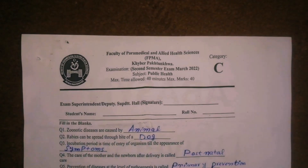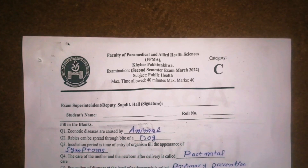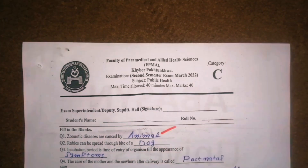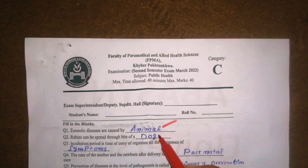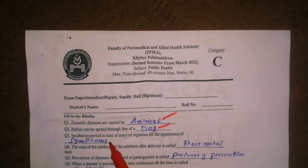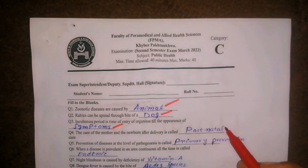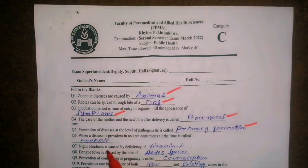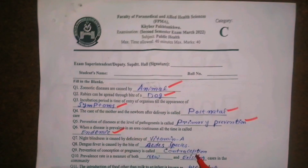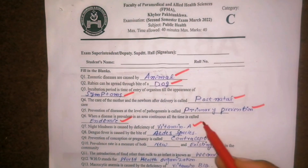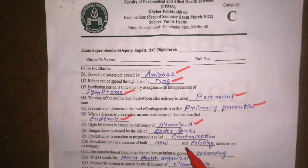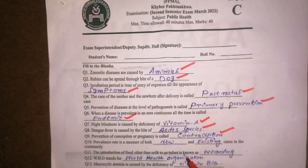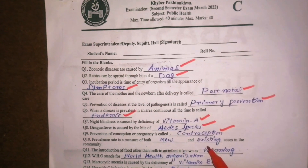We will discuss fill in the blanks. First: animal. Second: doc. Third: septums. Fourth: postnatal. Fifth: primary prevention. Sixth: endemic. Seventh: vitamin A. Eighth: Aedes species. Ninth: contraception. Tenth: first new.